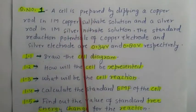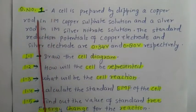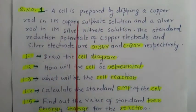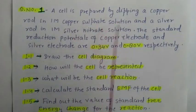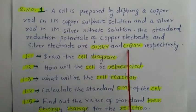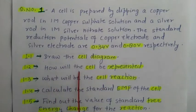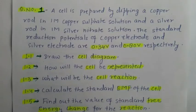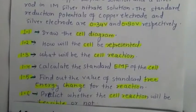Today we will solve a problem from the chapter electrochemistry. A cell is prepared by dipping a copper rod in one molar copper sulphate solution and a silver rod in one molar silver nitrate solution. The standard reduction potential of the copper electrode and silver electrode are 0.34 volt and 0.80 volt respectively. We need to draw the cell diagram, represent the cell, write the cell reaction, calculate the standard EMF, find the standard free energy change, and predict whether the cell reaction is feasible.